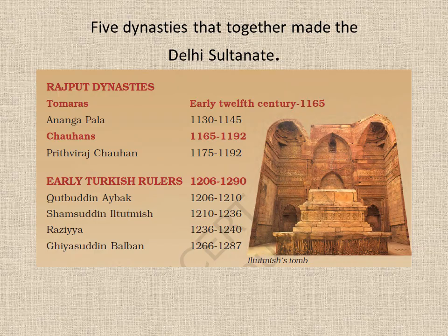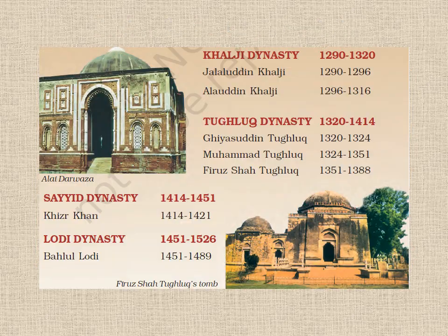These were the five dynasties that together made the Delhi Sultanate. Early Turkish rulers: Qutbuddin Aibak, Shamsuddin Iltutmish, Raziya, and Gayasuddin Balban. Khalji dynasty: Jalaluddin Khalji, Alauddin Khalji. Tughlaq dynasty: Gayasuddin Tughlaq, Mohammad Tughlaq, Firoz Shah Tughlaq. Sayyad dynasty: Khizar Khan. Lodi dynasty: Behlul Lodi.